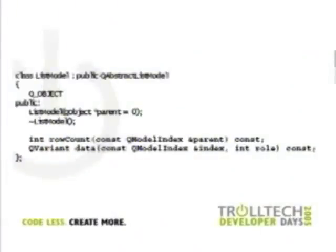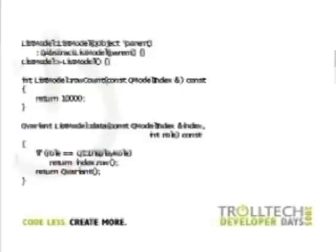Introducing the model interface. I want to show you how easy it is to instantiate your own custom model. It seems intimidating if you look at the API, but if you just want a minimal model, it's fairly easy — you don't have to implement that much. In this case we instantiate a list model and only have to re-implement two functions: rowCount and the data function. It's about 15 lines of code, telling the world that there are 10,000 rows and generating data on the fly.